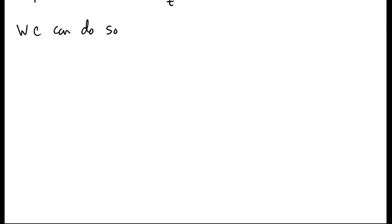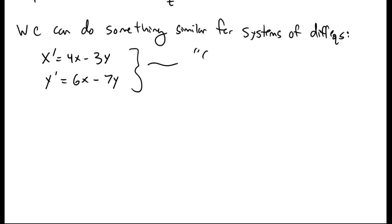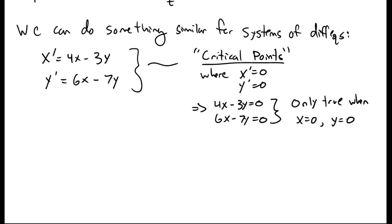Now let's consider a system of differential equations. For systems of differential equations, we can do a very similar type of analysis. The system we're going to look at is x' = 4x - 3y and y' = 6x - 7y. What we first do is look for what are called the critical points — the points where x' = 0 and y' = 0. Here that means 4x - 3y = 0 and 6x - 7y = 0, which only happens when x = 0 and y = 0.